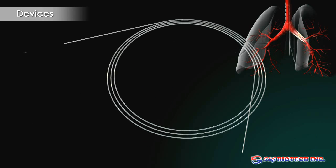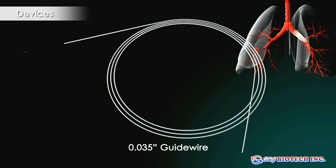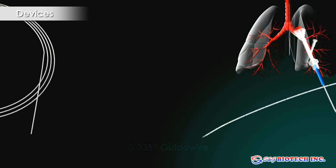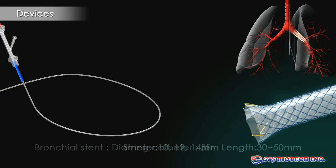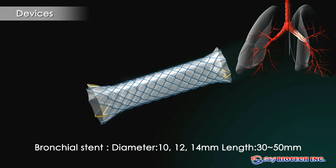Equipment includes a 0.035 inch guide wire and a sizing catheter 5 French. The bronchial stent is available in diameters of 10, 12, and 14 mm, with lengths from 30 to 50 mm.